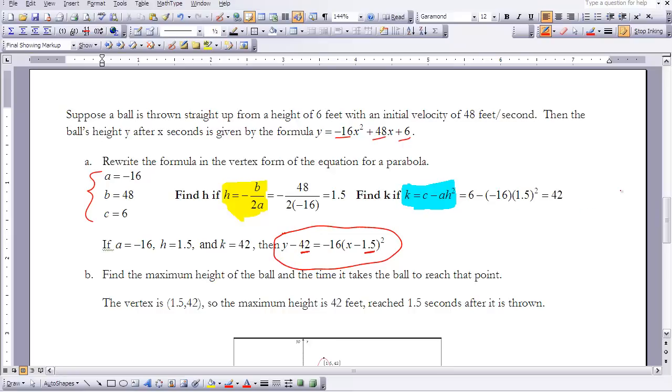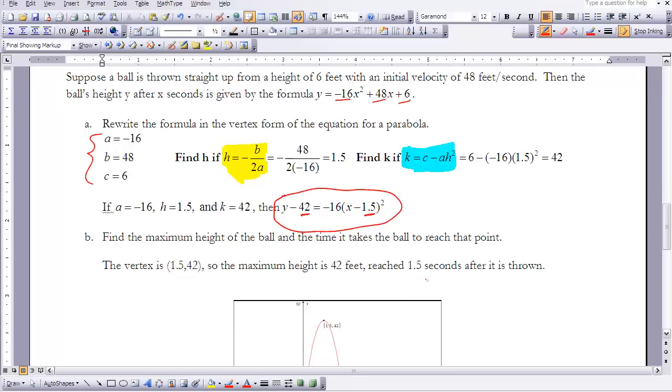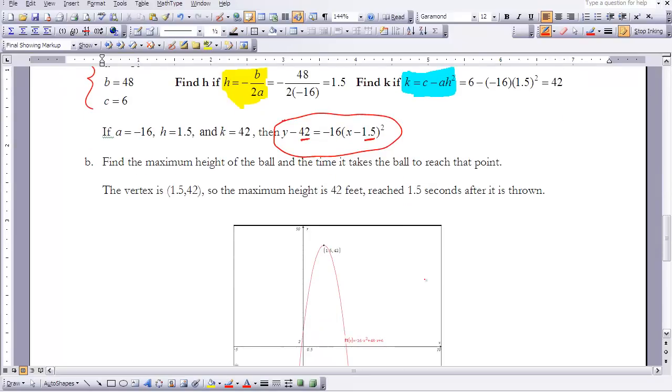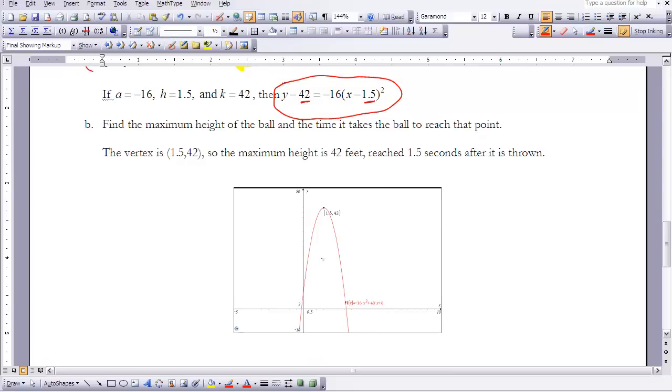Then it asks me to find the maximum height of the ball and the time it takes to reach that point. We know that our vertex is 1.5 and 42. That tells me that is my maximum height. To confirm, we can graph it. When you graph the equation and find the maximum value or the vertex, you find that you have 1.5 and 42. This concludes lesson 6-5.